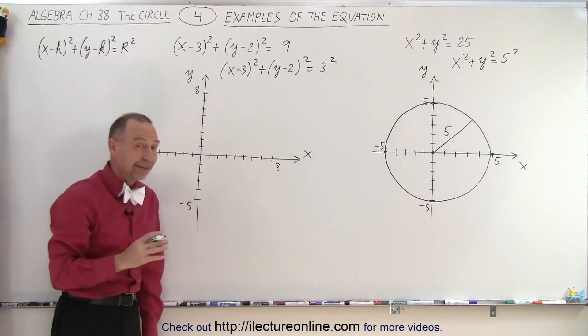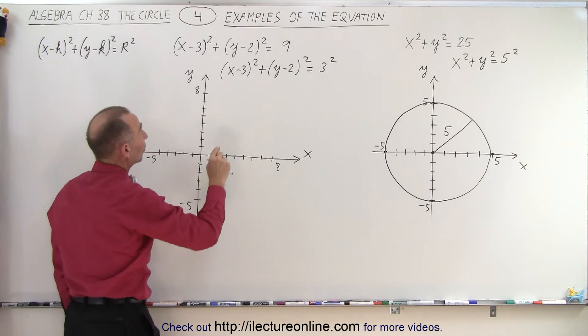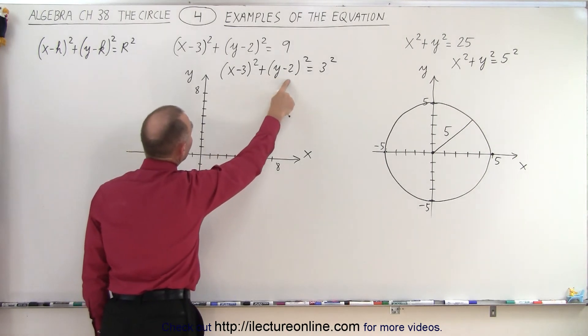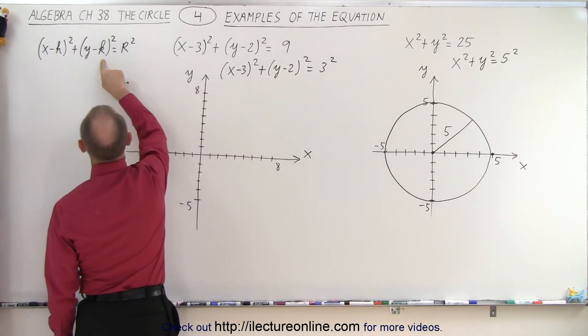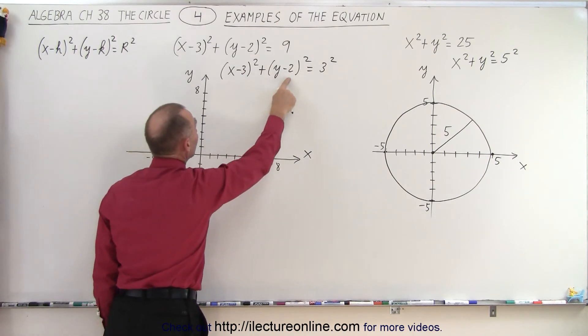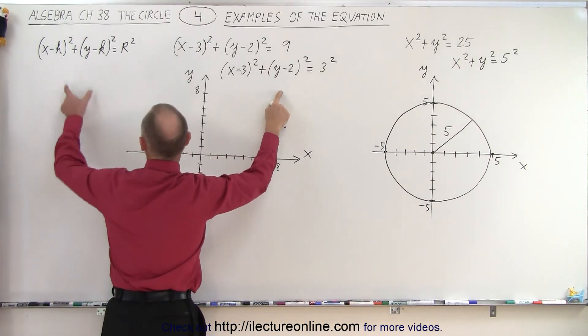Here we do the same thing, except the center is not at the origin. The center is at h and k. And of course, h and k in this case are 3 and 2. So when you see the negative sign that's part of the equation,